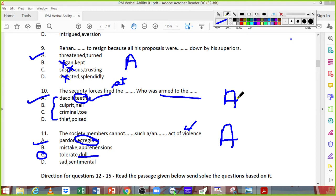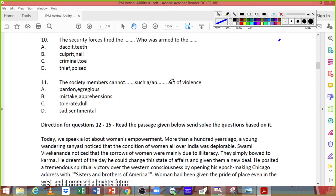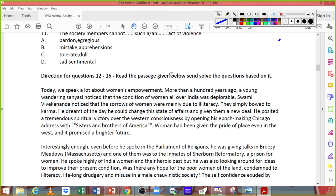Eleventh one. The society members cannot dash such an act of violence. So if it's violence, what you cannot do is you cannot pardon it. Tolerate B could have been an option, but then it is not a dull act of violence. An act of violence is not dull. Egregious, something which is unacceptable. So 11th one, A has to be my answer. Did you get 7 to 11? So this was also pretty simple, fill in the blanks. At least two we could have got out of three.